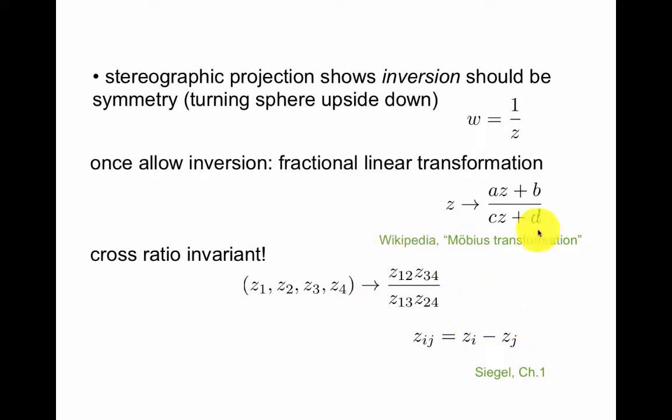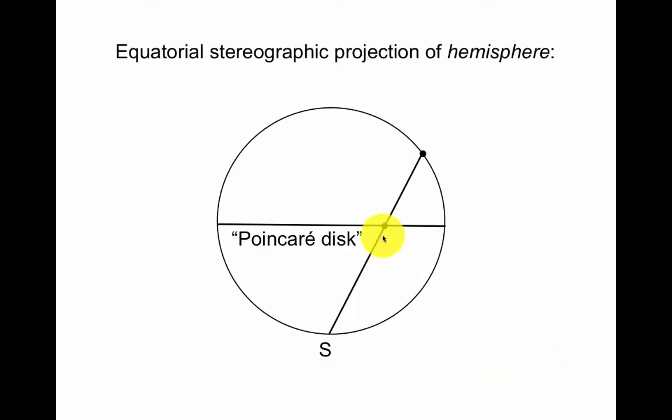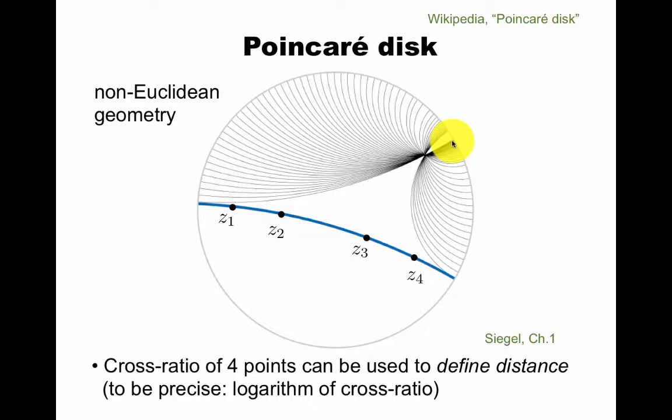Then this is invariant under this transformation. If you want to know more, there's a nice page here. There's a nice discussion in this book by Siegel. But how do we use this? Well, there's something called the Poincaré disc. It could be thought of as the stereographic projection of a hemisphere, and it is a model of non-Euclidean geometry. So you see lengths change between the interior of the disc and the boundary of this.